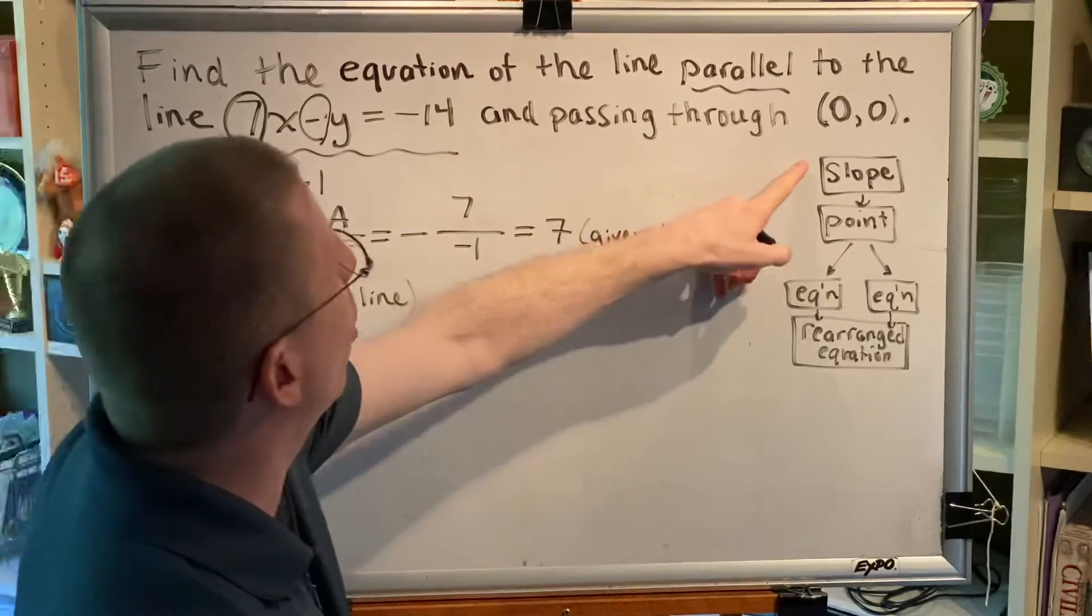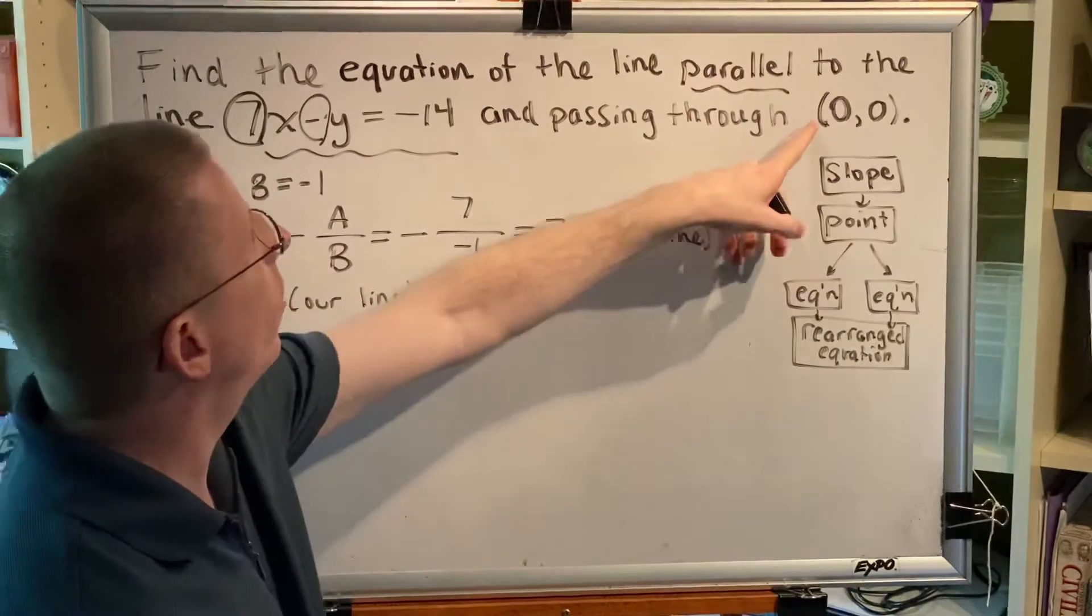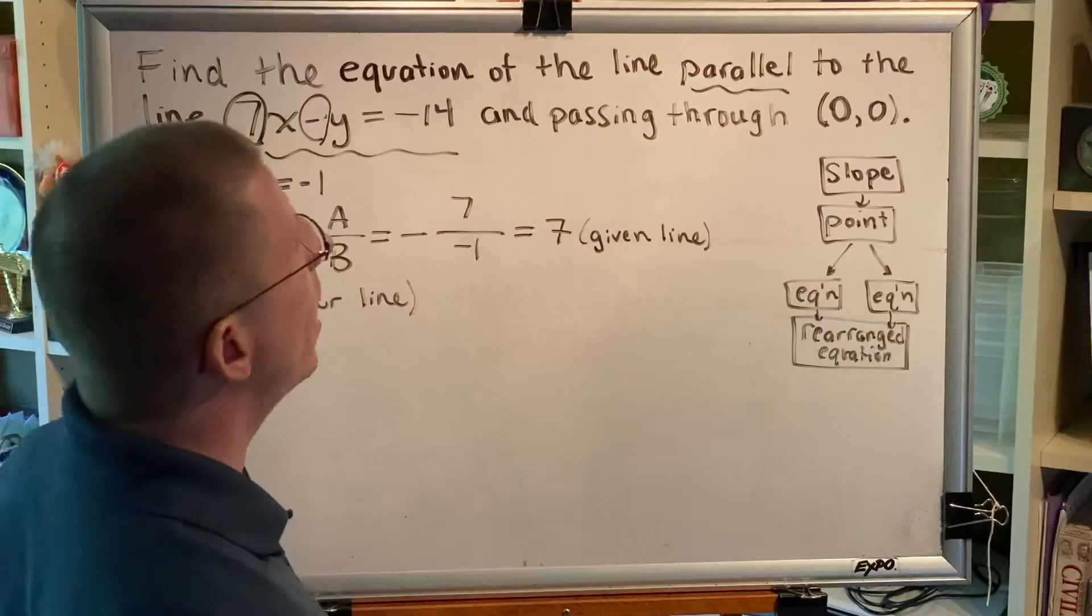Okay, so now we have our slope. Next we need a point. They only gave us one point and it's (0,0). Now we pick a path.